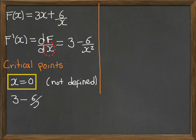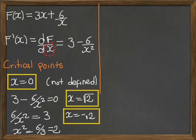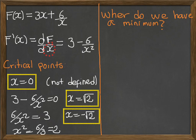So we want to find the critical points. First at x equal to 0 we do not have a derivative. The derivative is not defined. So this is a critical point. And the other critical points are when 3 minus 6 over x squared is equal to 0, which gives me a result x equal to the square root of 2 and the minus square root of 2. So where do we have a minimum? We have to decide which of these points, if any, give us a minimum.